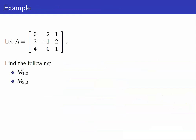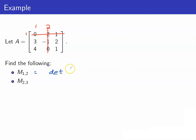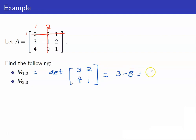For example, given a matrix, let us compute M12. For M12 we remove the first row and the second column. We now have the determinant of the resulting 2x2 matrix with entries 3, 2, 4, 1 — therefore that is equal to 3 minus 8, which equals negative 5.